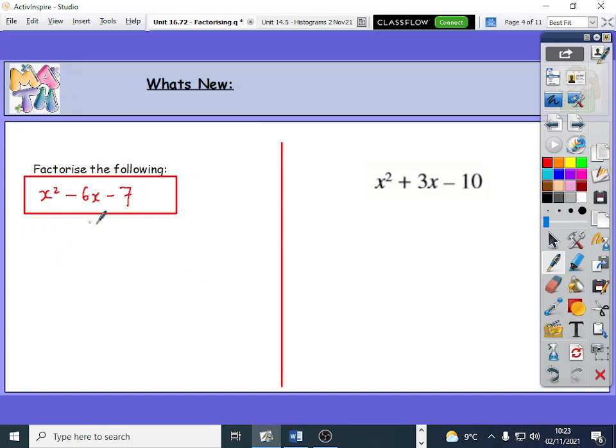First of all, when we factorise this, this is the sum, this number here, and this here is the product. So the product is going to be minus 7 and the sum we're going to make is minus 6. So you think of two numbers which were times together to make minus 7.